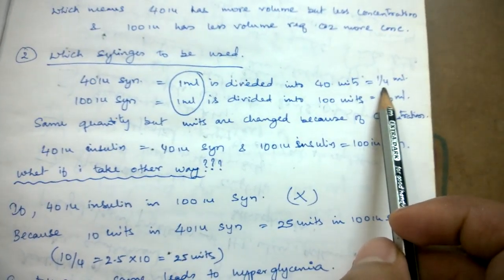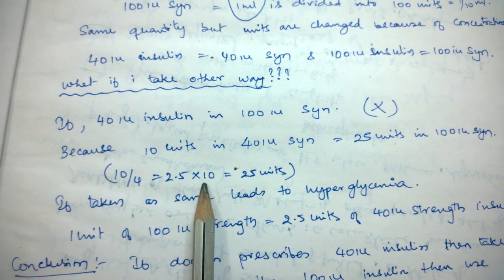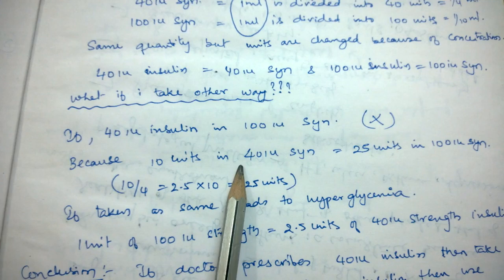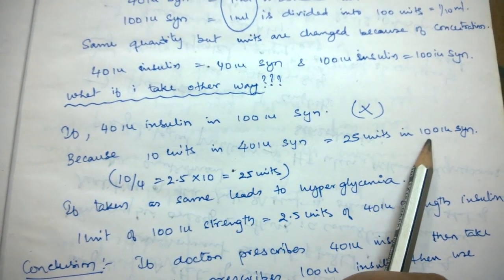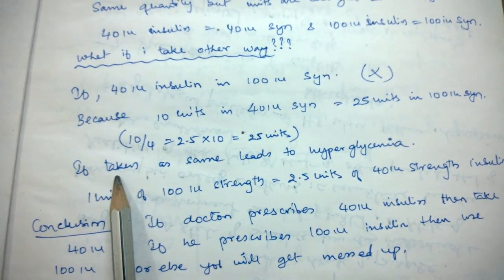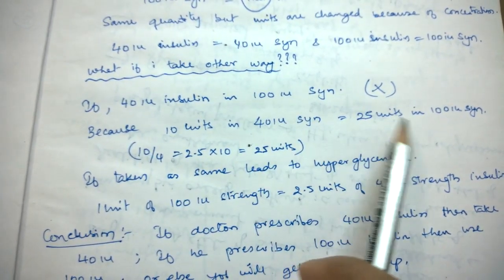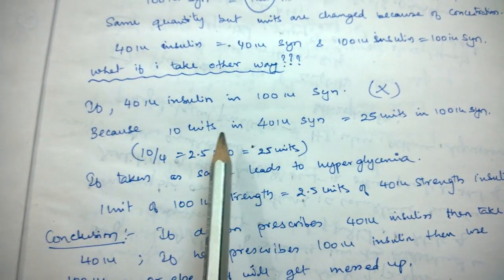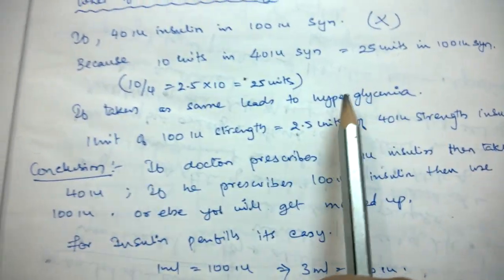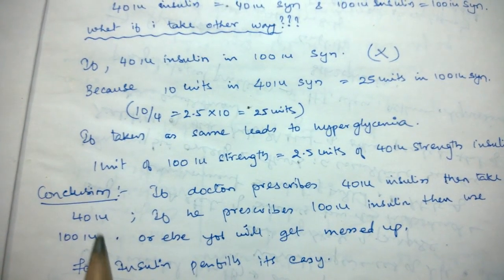Since one-fourth ml versus one-tenth ml gives a factor of 2.5, taking 10 units in a 40 IU syringe equals 25 units in a 100 IU syringe. So if you draw 10 units using a 40 IU syringe and then measure the same mark on a 100 IU syringe, the actual insulin quantity drawn is far less. This could lead to hyperglycemia. That is why you must be cautious about which syringe you use.